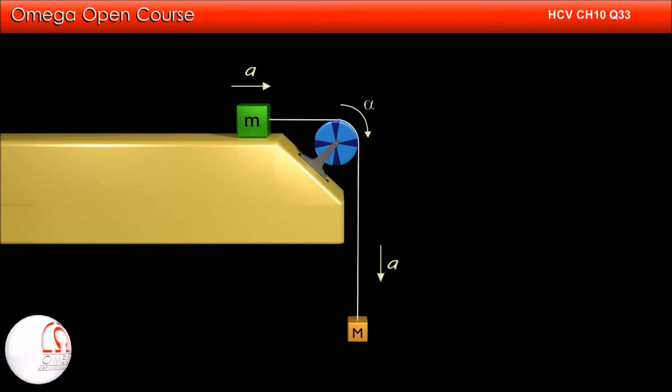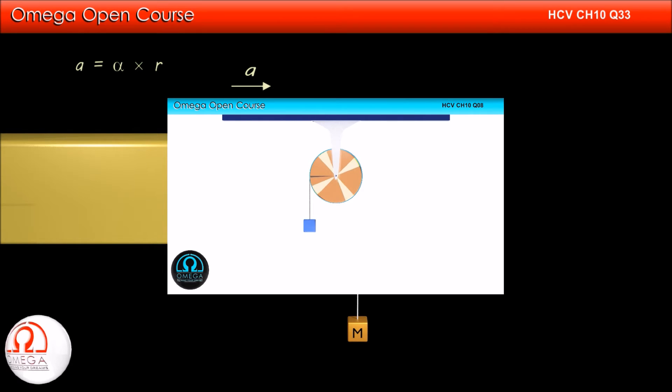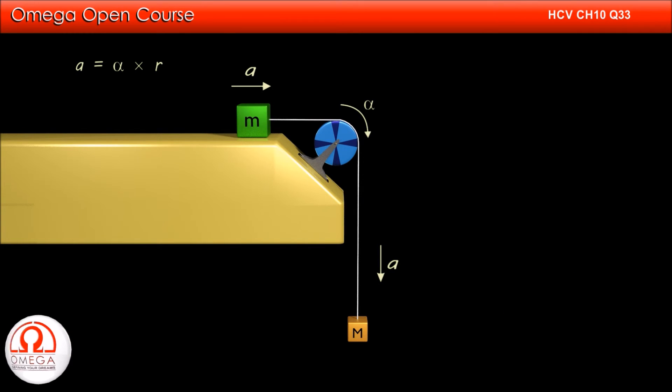Let us assume the angular acceleration of the pulley is α. Since the string does not slip over the pulley, a must equal α times r. If you do not know the relation between linear and angular acceleration, watch our video explaining this relation. Link for the video is shown on screen and given in the description below. From this relation, we get α = a/r.